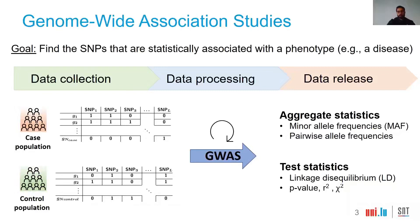But why is genomic data important? Because we can use genomic data to conduct genome-wide association studies. The main goal of GWAS is to find SNPs that are statistically associated with a phenotype — for example, a disease. The first step of GWAS is to collect genomic data from two different populations: the case population, which are the people that express the phenotype, for example people that have diabetes, and the control population, which are the healthy people.